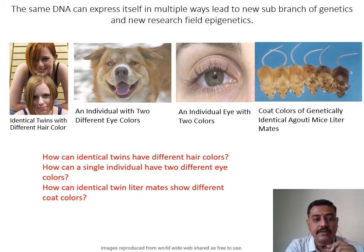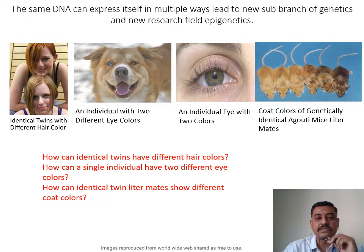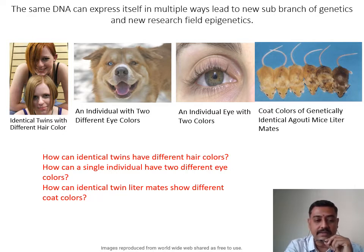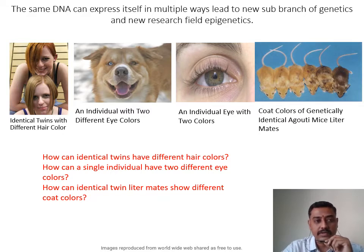These observations led to understanding a new field called epigenetics. Though identical individuals share the same DNA, their genes are expressed differently in multiple ways. This field provides interesting answers on why identical twins have different hair colors, a single individual can have two different eye colors, or genetically identical littermates show different coat colors.